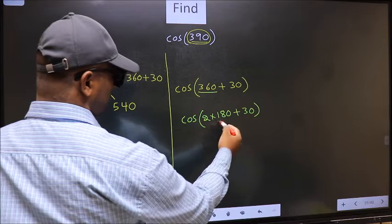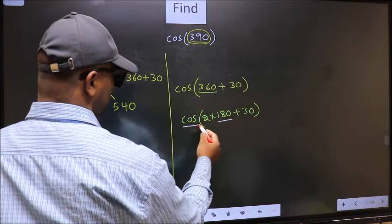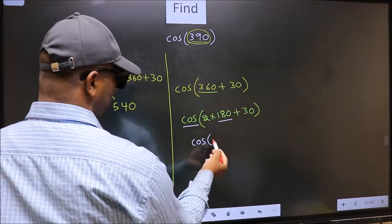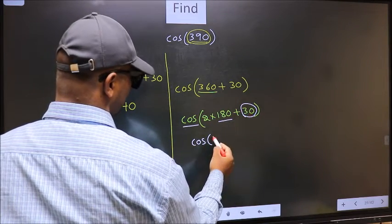Here we have 180, so cos is not going to change. It will remain cos, and inside we get the angle 30.